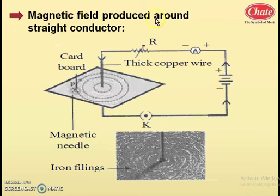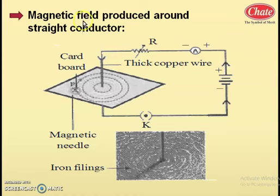Let us study the magnetic field produced around a straight conductor. In an earlier class, you studied the magnetic field produced due to a dipole magnet. Similarly, we check whether we get a similar magnetic field from electromagnetism. That magnetic field has a particular direction — the magnetic lines start from the north pole of the magnet and end toward the south pole, so direction is from north to south. Let us study the magnetic field produced around a straight conductor.